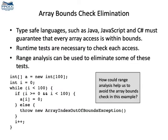Another important optimization that range analysis enables is the elimination of array bounds checks. Type safe languages guard accesses to arrays — if we try to access them outside bounds, then an exception ensues. There must be a check to trigger the exception, like an if-then-else inside the code. But sometimes, if we know the ranges of the variables, we can eliminate these checks. You can verify that such optimization is possible in this program on the left.